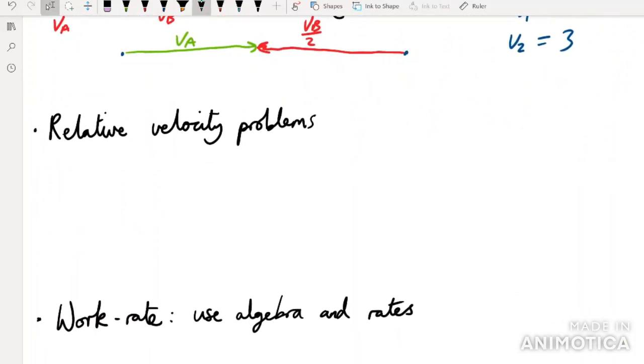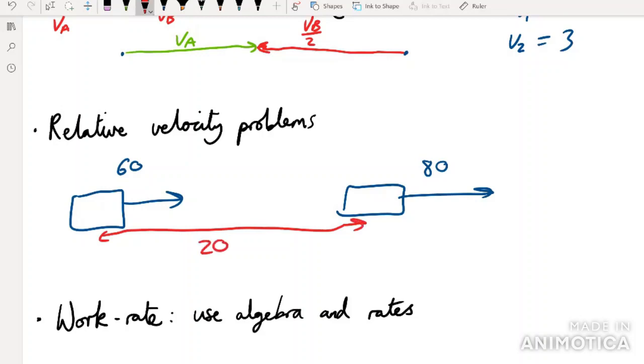Then we've got the idea of relative velocity problems. And these can be solved extremely easily just by remembering that, let's say we have a car going this way at speed 80, and we've got another car going this way at speed 60. And they start off, let's say, 20 miles apart or something. And the question is something like, how long until, let's call this A, call this B, until B is 10 miles ahead of A?